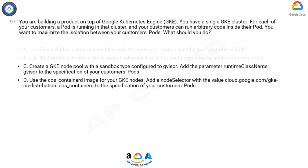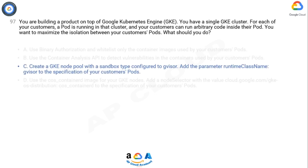The correct answer is Option C. You are building a product on top of Google Kubernetes Engine (GKE) with a single GKE cluster. To maximize isolation between customers' pods in a GKE cluster, the recommended approach is C: create a GKE node pool with a sandbox type configured to gVisor and add the parameter runtime class name gVisor to the specification of your customers' pods.